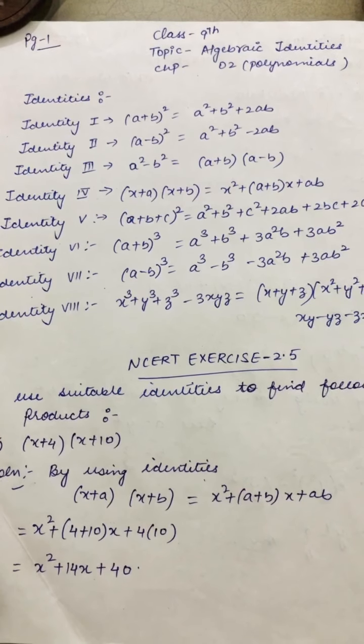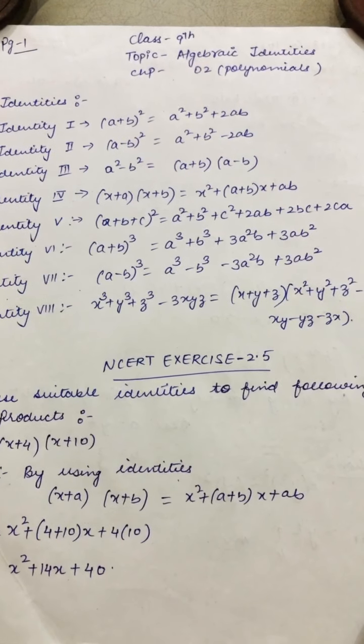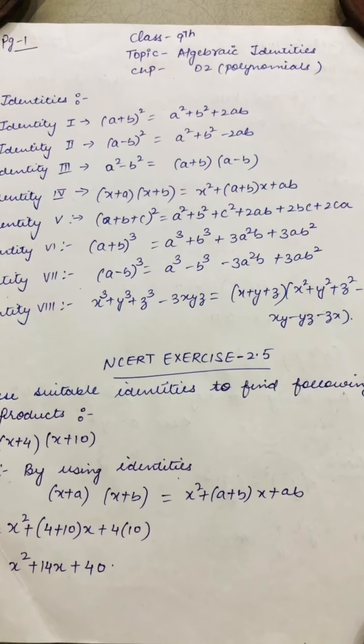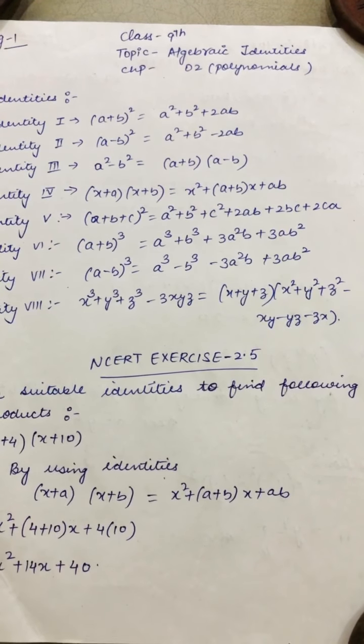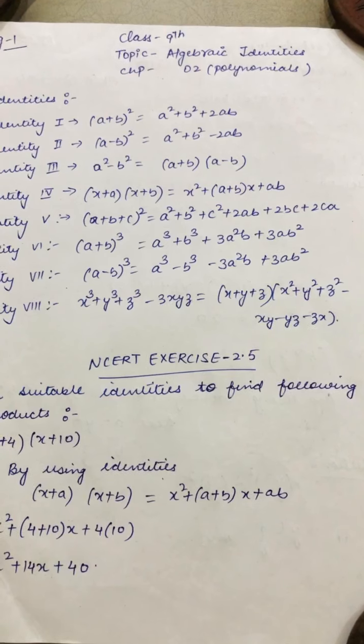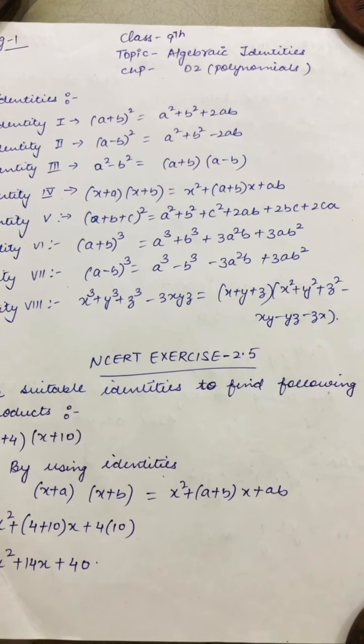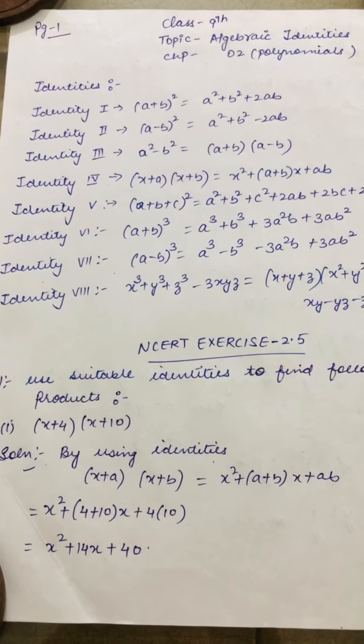Identity number 8: x³ + y³ + z³ - 3xyz = (x+y+z)(x² + y² + z² - xy - yz - zx). There is a separate bracket. So firstly, you have to learn all 8 identities. After that, you can do NCERT exercise 2.5.